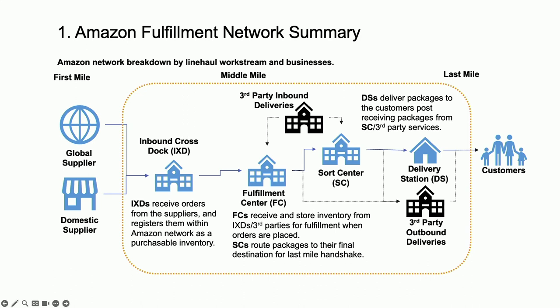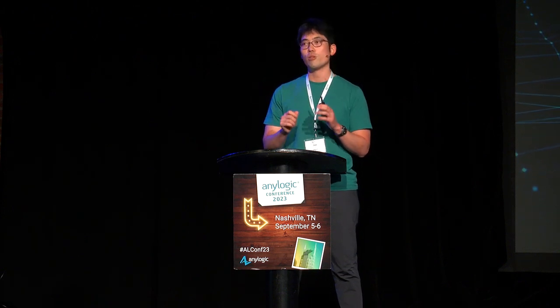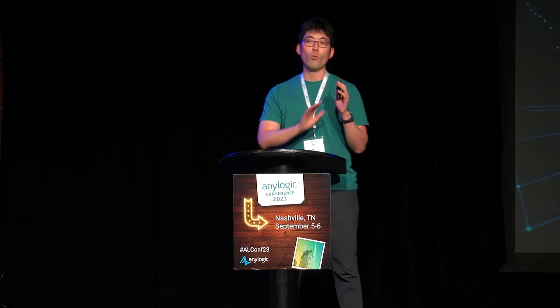Nothing I'm mentioning is confidential. From the IXT to the fulfillment center — think of the fulfillment center as a library that holds stuff you can order — as soon as a customer clicks order on Amazon.com, that unit gets packed, sent to a sort center, then from the sort center to a delivery station, and anything beyond that becomes last-mile scope.